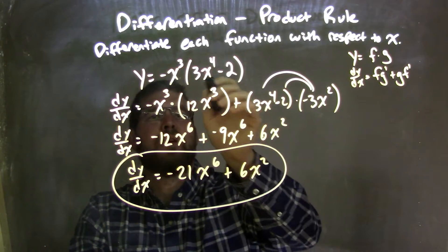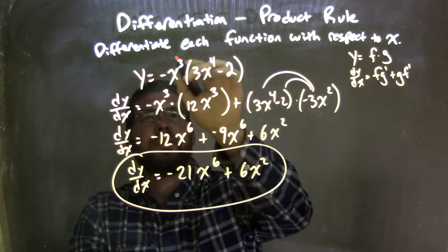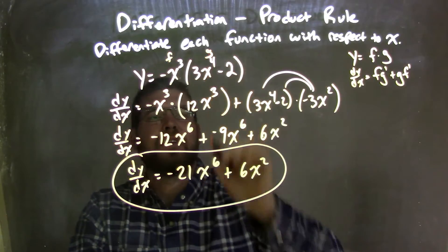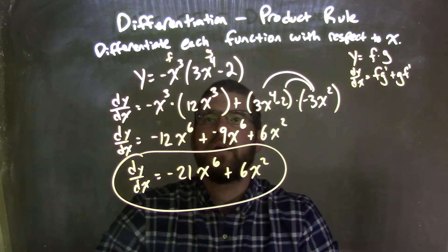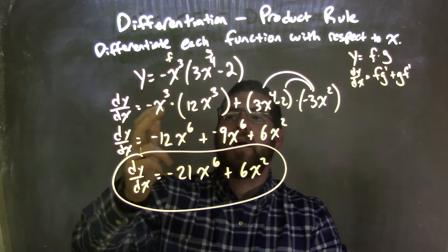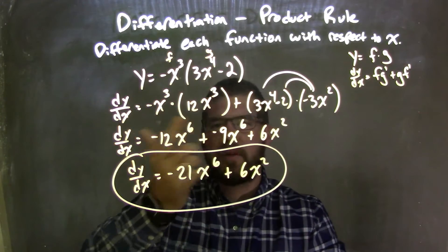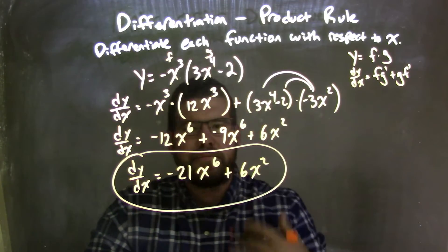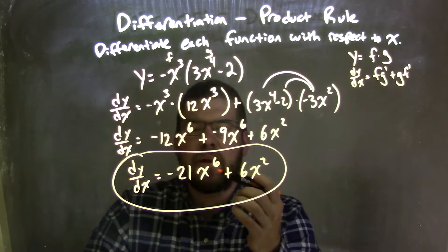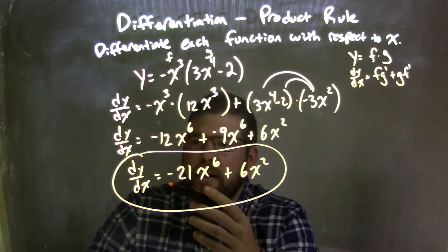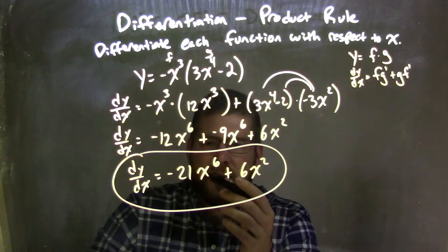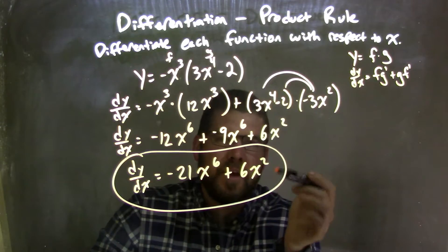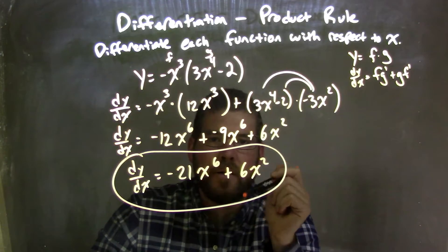We break these apart into f and g — two functions. And then we simplify using basic algebra, and we got our final answer of dy/dx is equal to negative 21x to the sixth plus 6x squared.